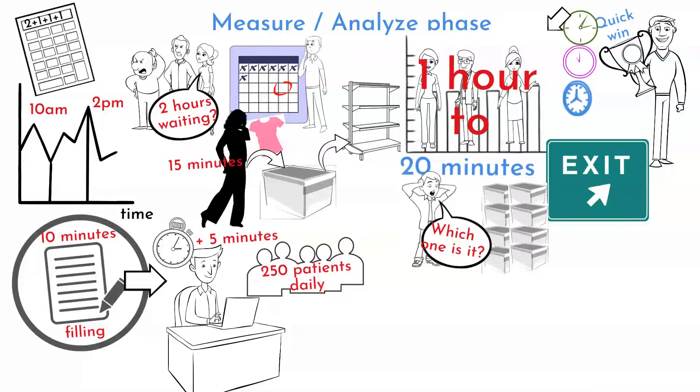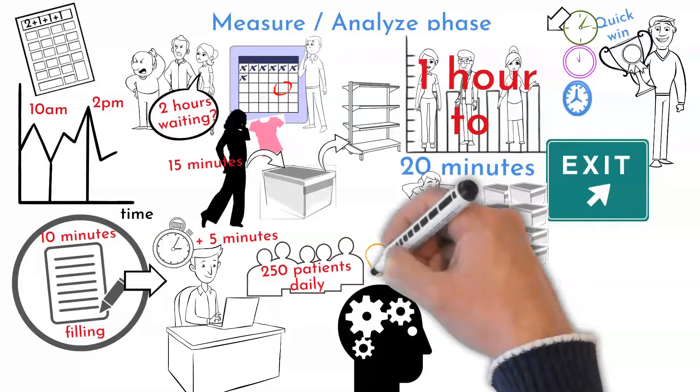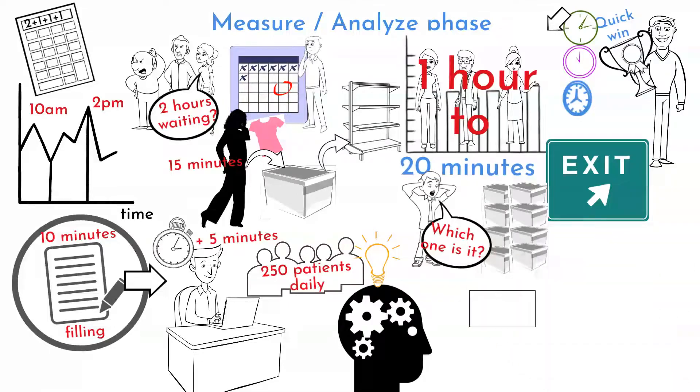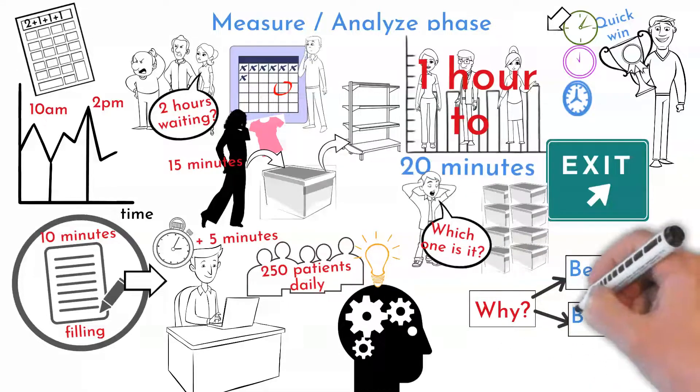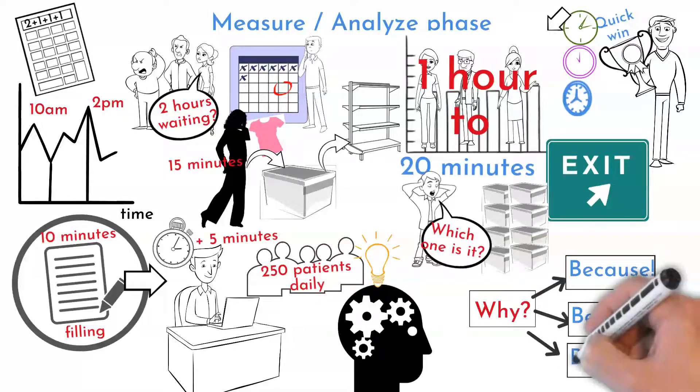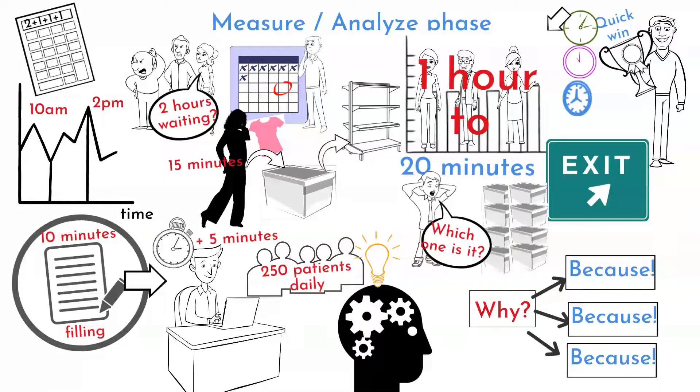Storing system needed to be improved. Brainstorming and 5 Why Diagram helped team to uncover other improvement opportunities in storing. Storing empty boxes, large boxes shape, boxes searching, and storing organization are few of them.